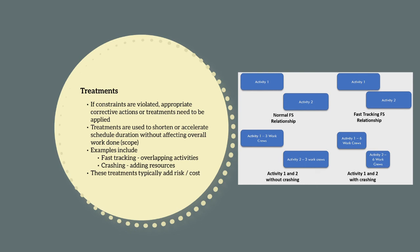Two of the most common treatments used are crashing and fast tracking. Fast tracking is the process of changing the start-to-finish relationship between activities to shorten the project duration. Under normal circumstances, if activity 2 requires activity 1 to be completed before it can begin, using fast tracking we will start activity 2 before activity 1 is fully complete. A classic example of fast tracking is the relationship between design and construction — ideally design would finish before construction begins, but construction will start before design is fully finished to reduce the project timeframe. Another example might be testing and commissioning beginning before a system is fully constructed. Fast tracking typically increases risk — if you start building off a non-IFC design, any design changes will incur significant construction costs.